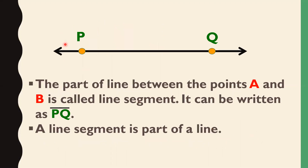Now, if we draw two points on a line and give them names P and Q, then the part of the line between point P and Q is called a line segment. This can be written as PQ with a line drawn on top, but here you do not draw arrows, because a line segment is just a part of a line with two definite end points.